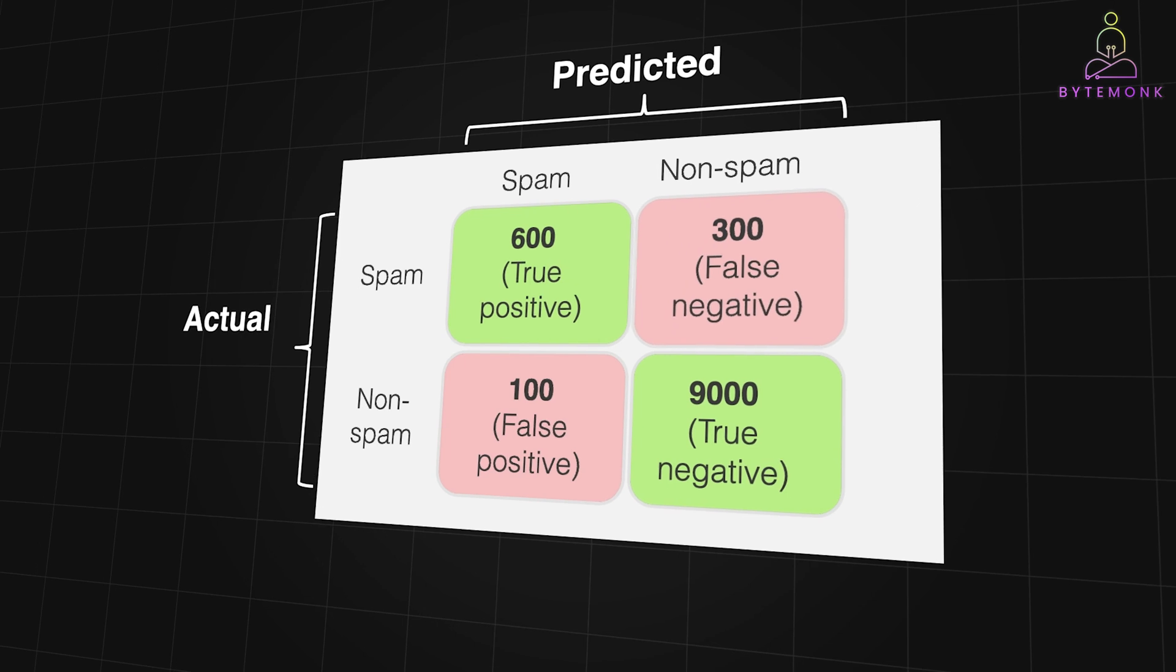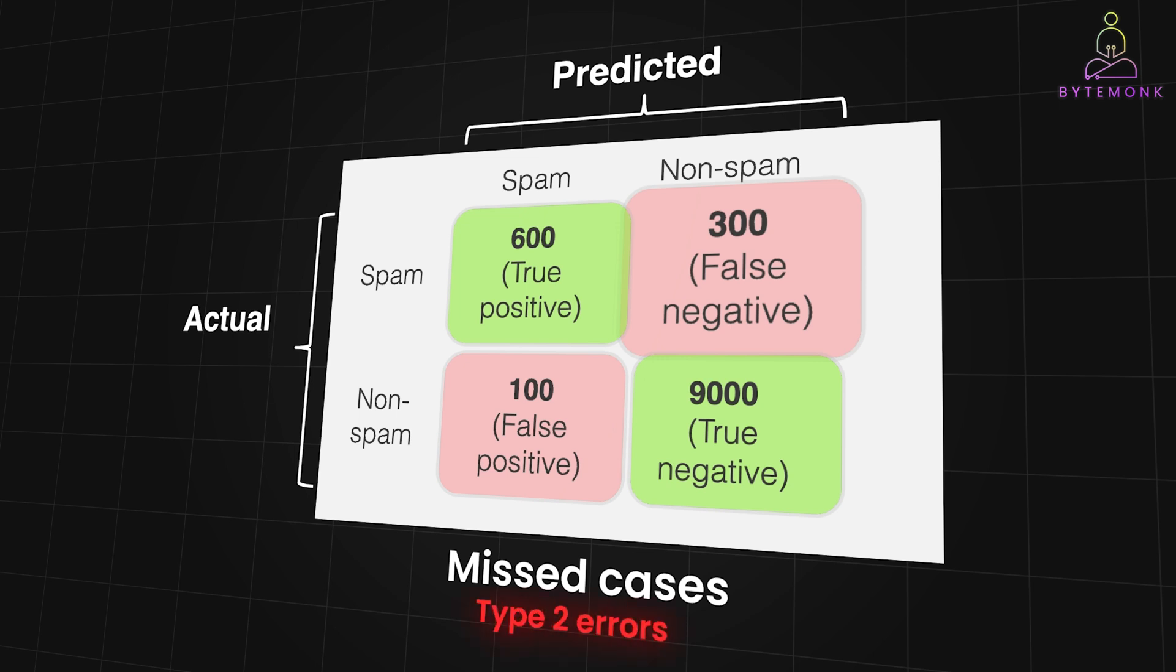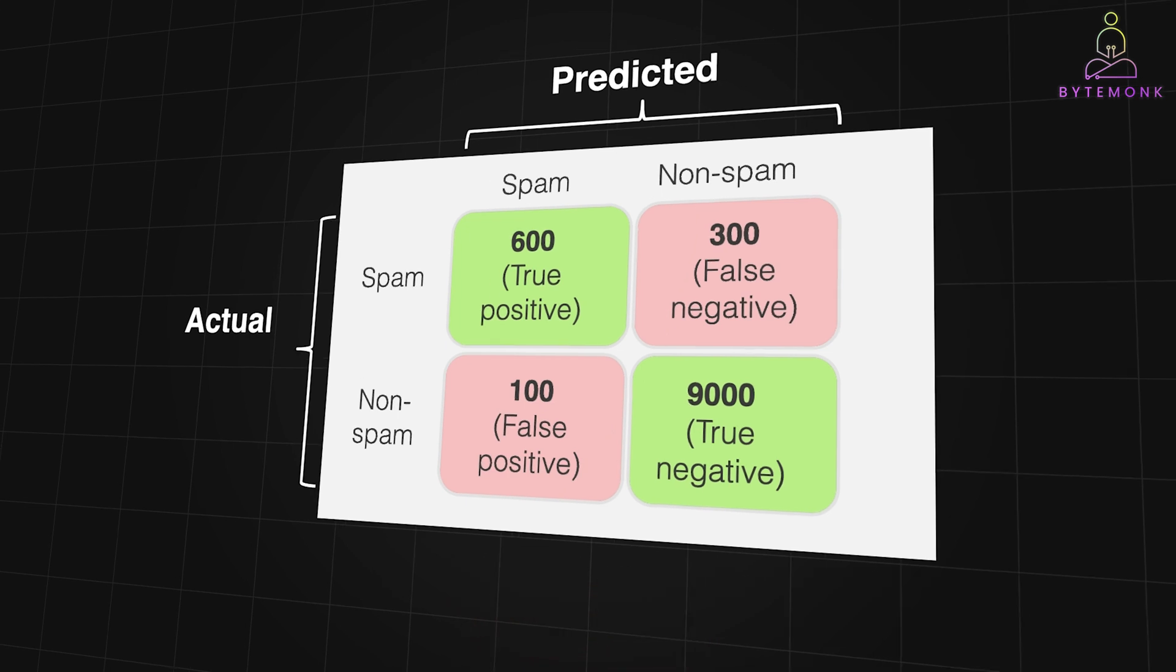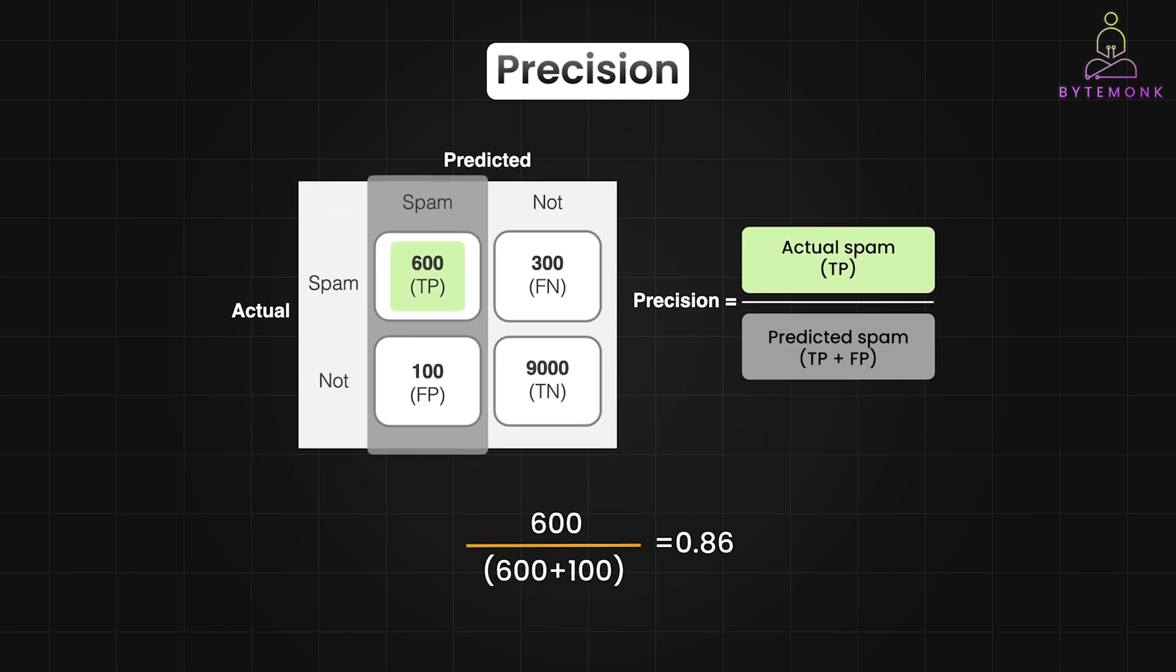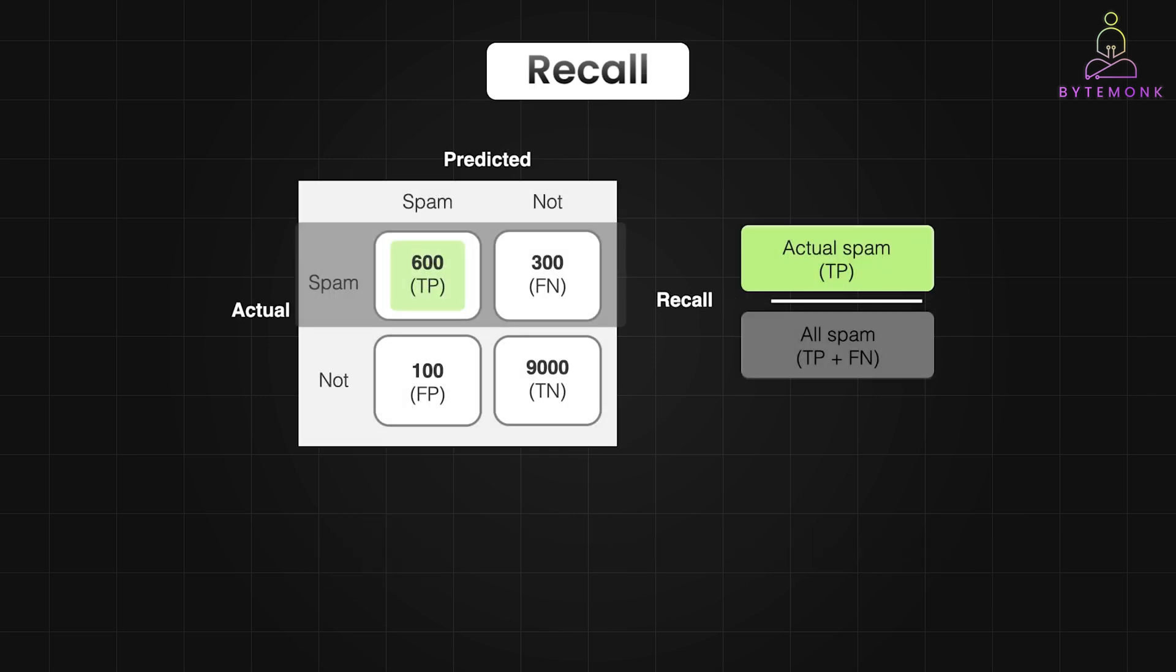Finally, FN shows the number of incorrectly predicted negative cases. These are the missed cases, also known as type 2 errors. In spam detection, this is the number of missed spam emails that made their way into your primary inbox. Using this matrix, you can calculate precision by dividing the correctly identified positive cases by the total number of positive predictions made by the model. In our example, the precision is 0.86, so when predicting spam, the model was correct in 86% of cases. You can also calculate recall by dividing the number of true positives by total number of positive cases. In our example, the recall is 0.67, meaning the model correctly found 67% of spam emails. The other 33% made their way into the inbox undetected.